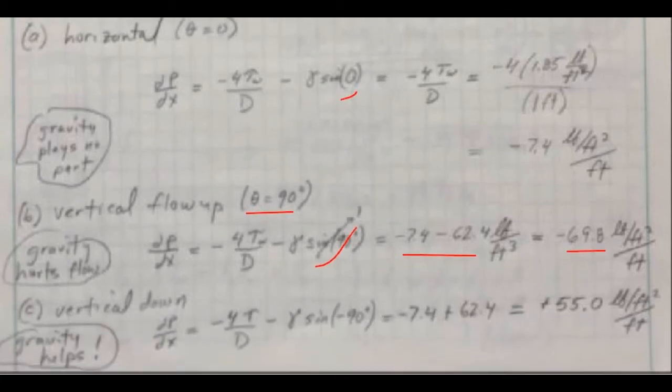And lastly, as you would expect, when we have the downward flow, our theta is negative 90 degrees, so sine of negative 90 degrees becomes a negative one, we get a positive contribution of gravity here.